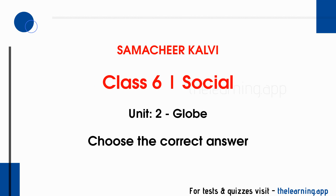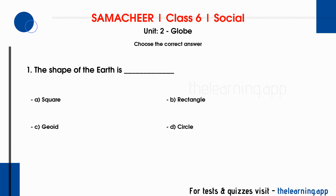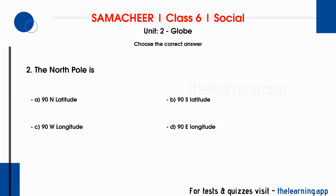Choose the correct answer. Question 1: The shape of the Earth is dash. Options are A. Square, B. Rectangle, C. Geoid, D. Circle. Correct answer is C. Geoid.